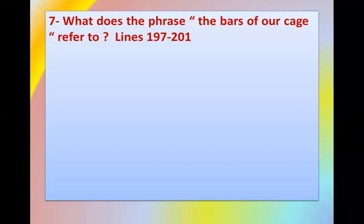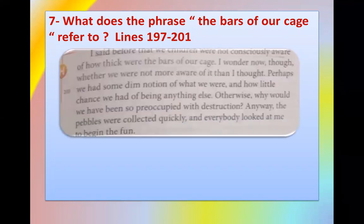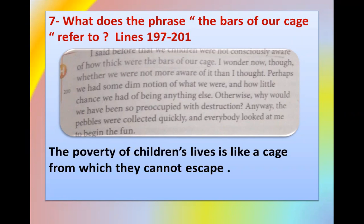Number seven: what does the phrase 'the pause of our cage' refer to? The narrator said, 'We children were not consciously aware of how we think — we were the pause of our cage.' The poverty of the children's lives is like a cage from which they cannot escape.